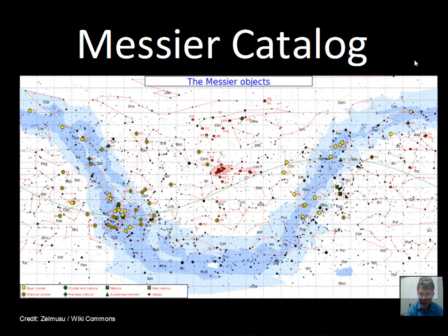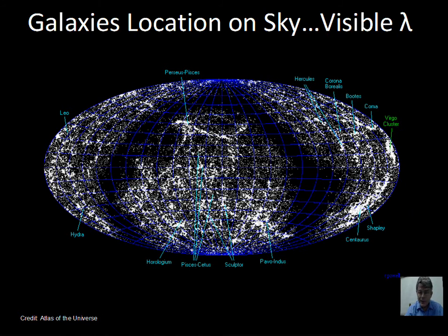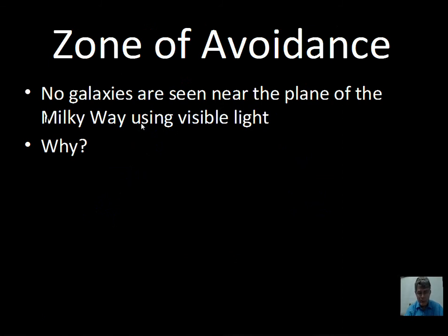This chart shows the locations of galaxies — each dot is a galaxy, and we see them in various places across the sky. But there is a zone of avoidance: a place on the sky where we cannot see galaxies. This is a map of galaxy locations using visible light. Why would we not be able to see galaxies in that region? There's a hint from past videos about our difficulty seeing the center of the Milky Way using visible light — the same difficulty applies here.